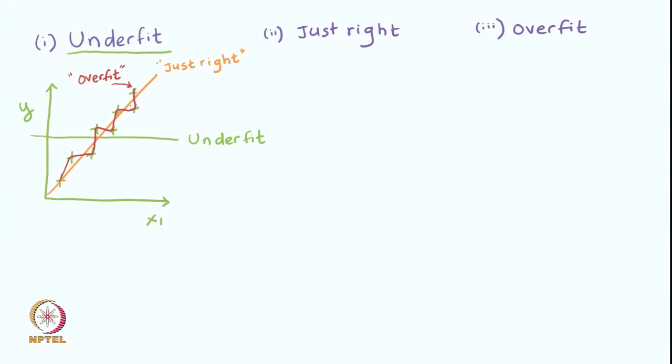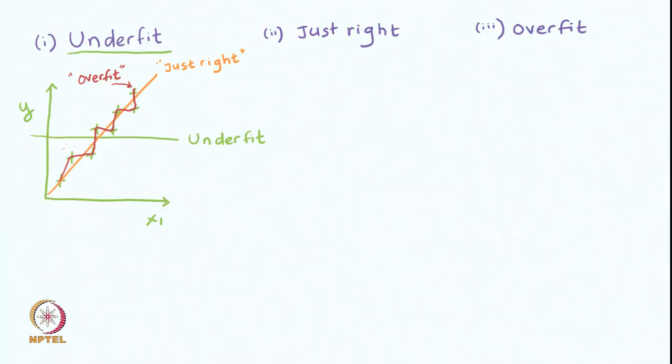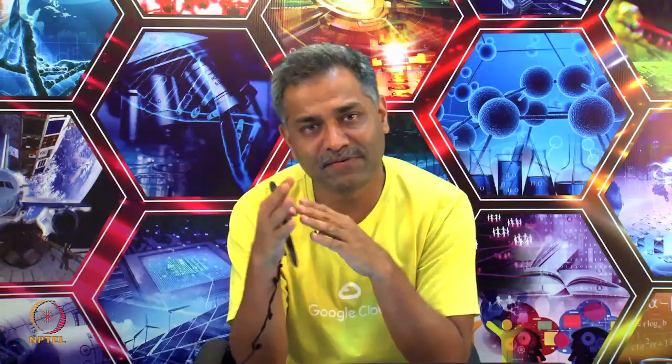If you slightly perturb or select any other point, the overfitted model would not be able to predict it. So, underfitting and overfitting are our problems. The next question is how do we really diagnose them. In underfitting we are using a model with a single parameter which is bias, whereas in overfitting we are using a polynomial of degree 7 to get a perfect fit on the training data. These are problems of either too few parameters in the case of underfitting, or too many parameters in the case of overfitting. Our job is to come up with the right set of parameters for just the right fit.